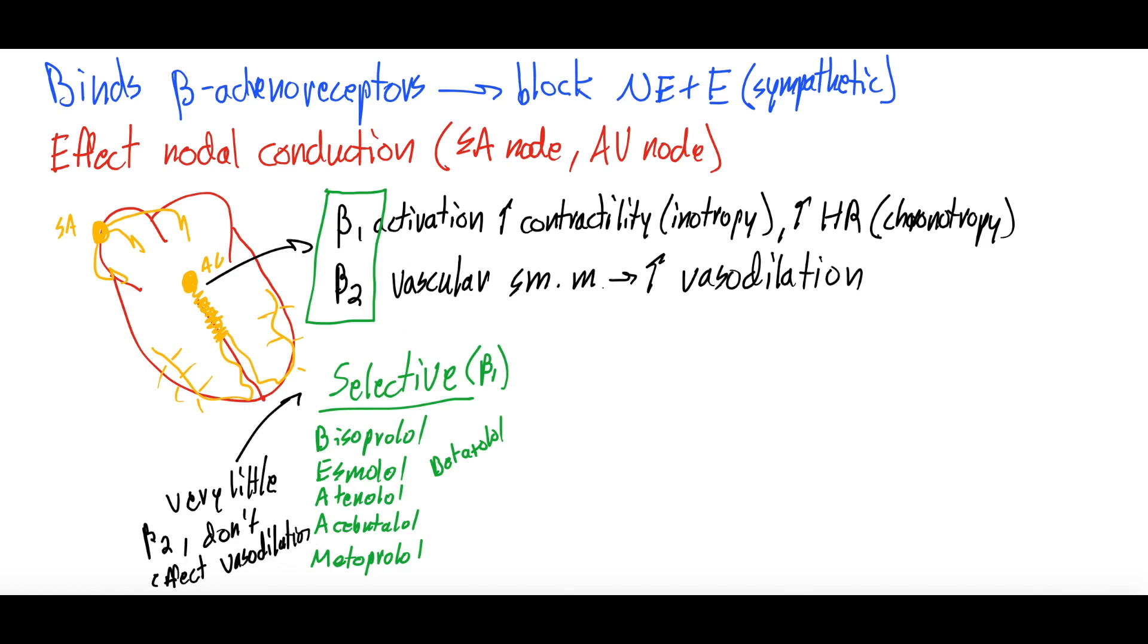This is in contrast to non-selective, which are going to have both beta 1 plus beta 2 activity. The non-selective are the ones that aren't selective.